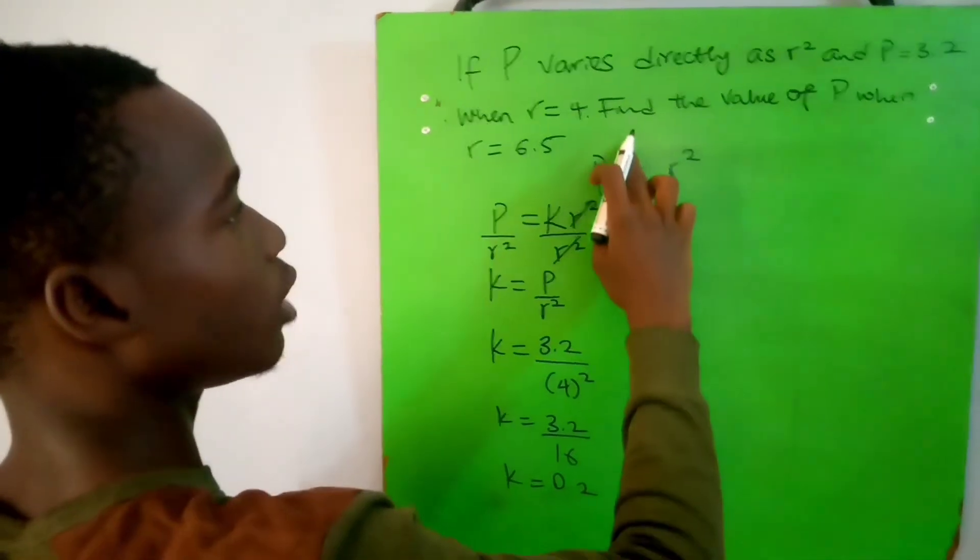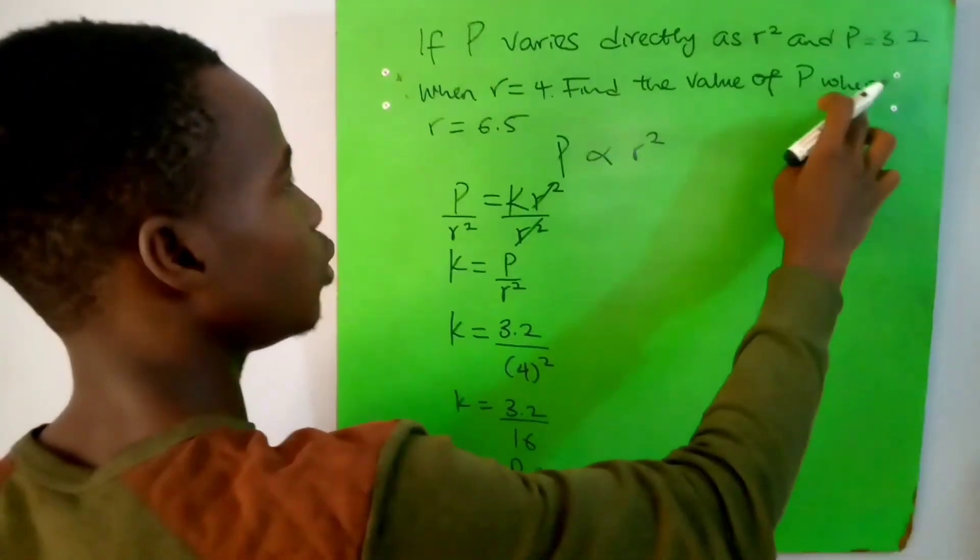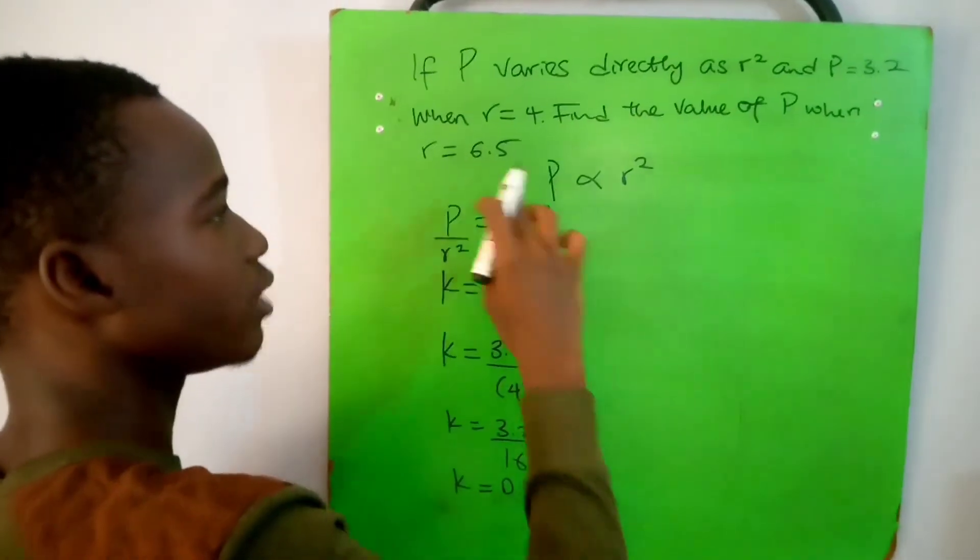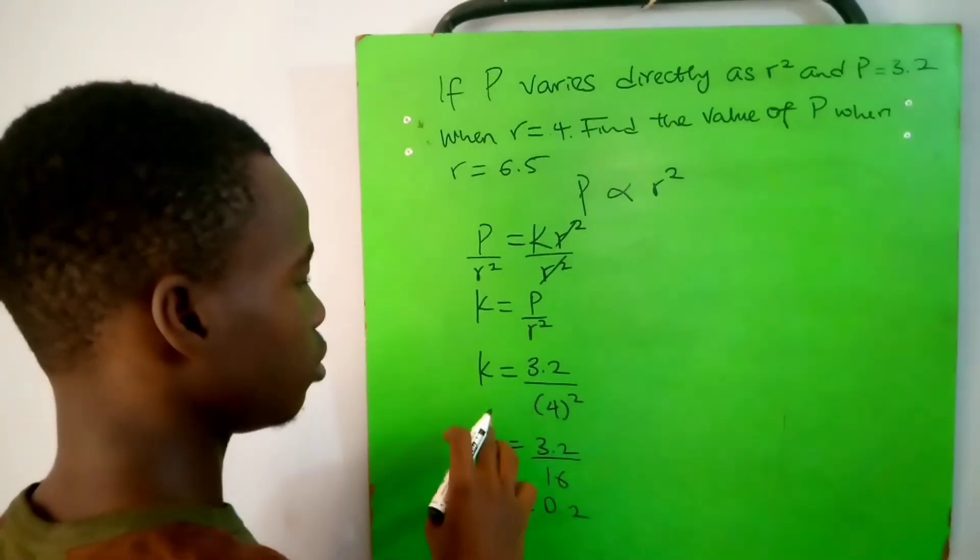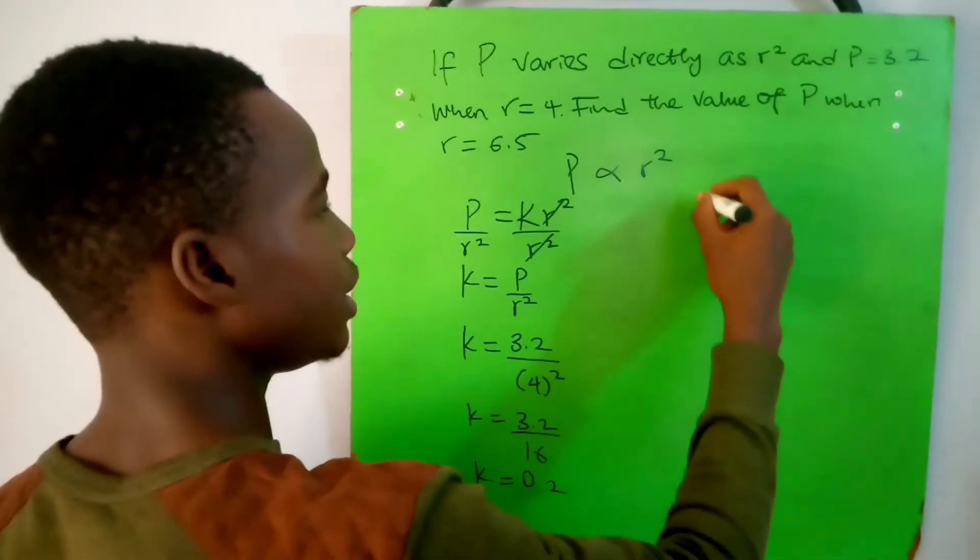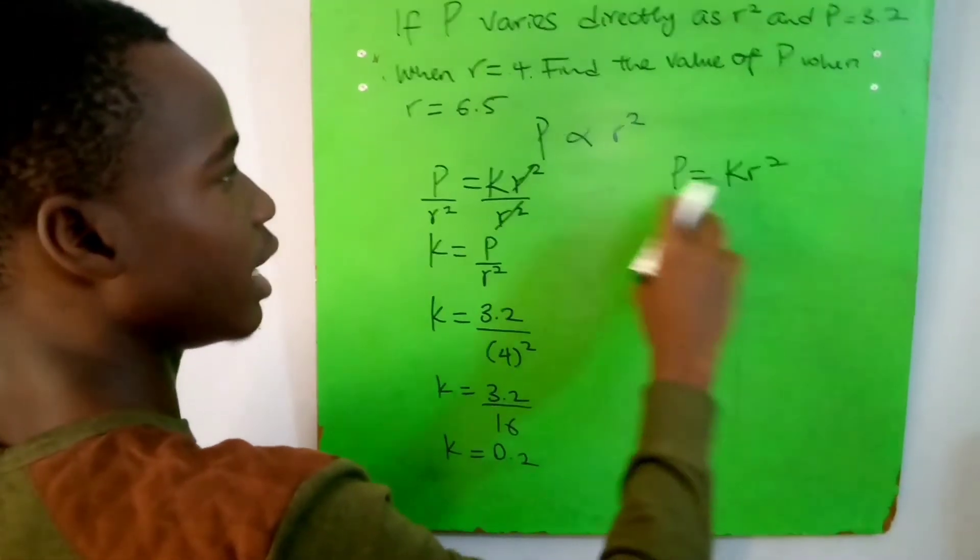The question says find the value of P when r equals 6.5. So we have k and we have r. We are looking for P from this formula: P equals kr squared. We derived it from P is directly proportional to r squared.